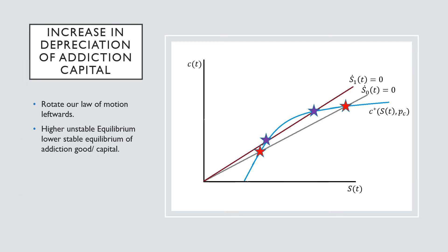Now if we see an increase in our depreciation rate delta, we'll see a rotation outward leftward of this curve. We'll see a higher unstable equilibrium and a lower stable equilibrium of our addiction good and capital. So we still have two equilibria, just that the lower one is going to get a little bit higher and the higher one is going to get a little bit lower.